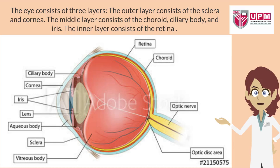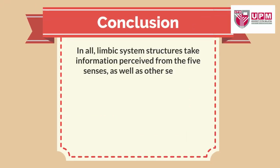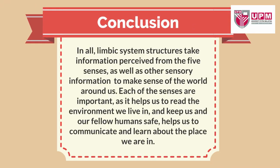The eye consists of three layers. The outer layer consists of the sclera and cornea. The middle layer consists of the choroid, ciliary body, and iris. The inner layer consists of the retina. In all, limbic system structures take information perceived from the five senses, as well as other sensory information, to make sense of the world around us. Each of the senses is important as it helps us read the environment we live in, keeps us and our fellow humans safe, and helps us communicate and learn about the place we are in.